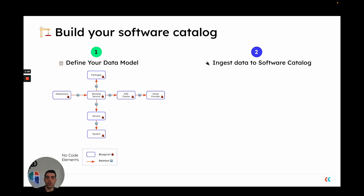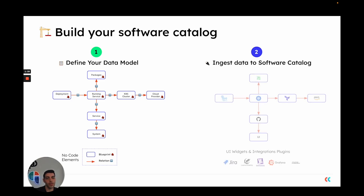This allows you to create views that show you exactly which deployments deployed which service, where your service is deployed — on which Kubernetes cluster or cloud environment, and so on.